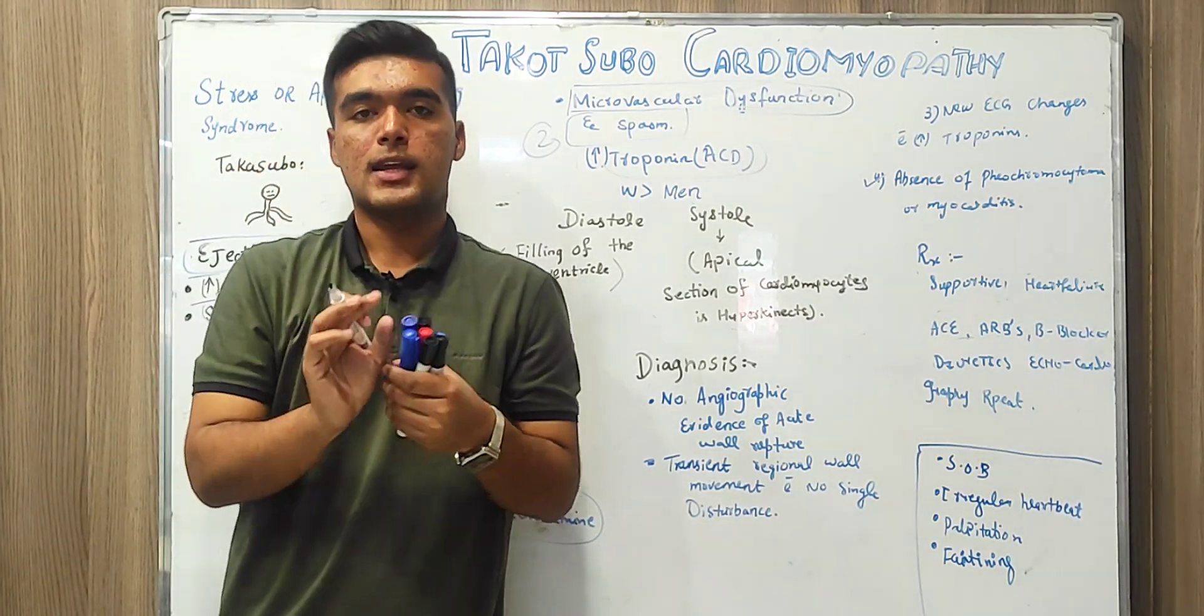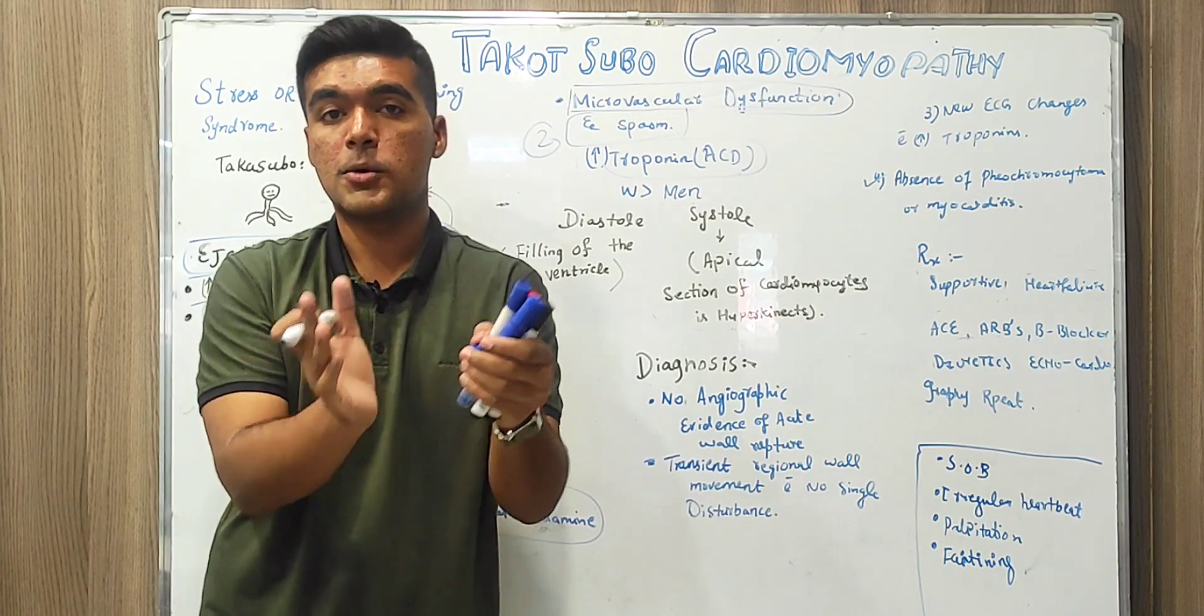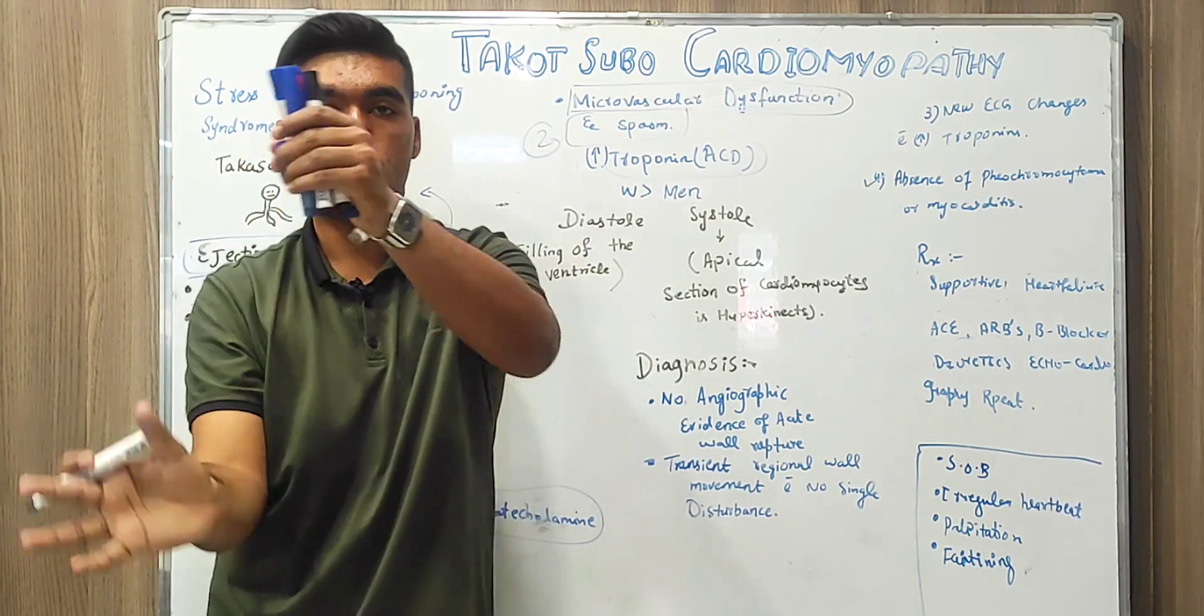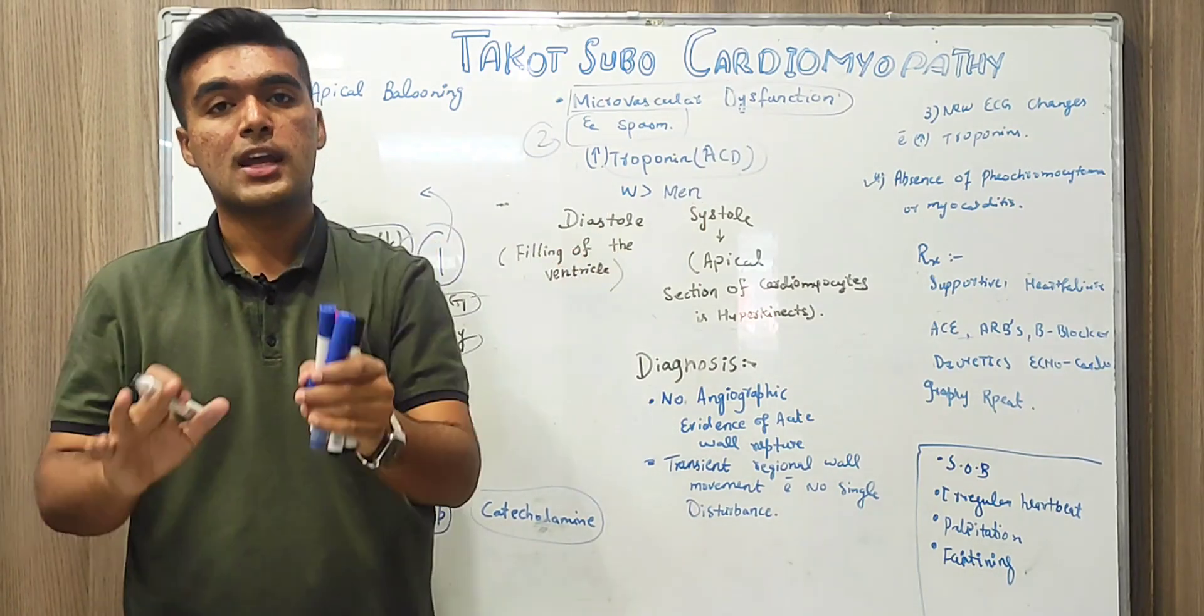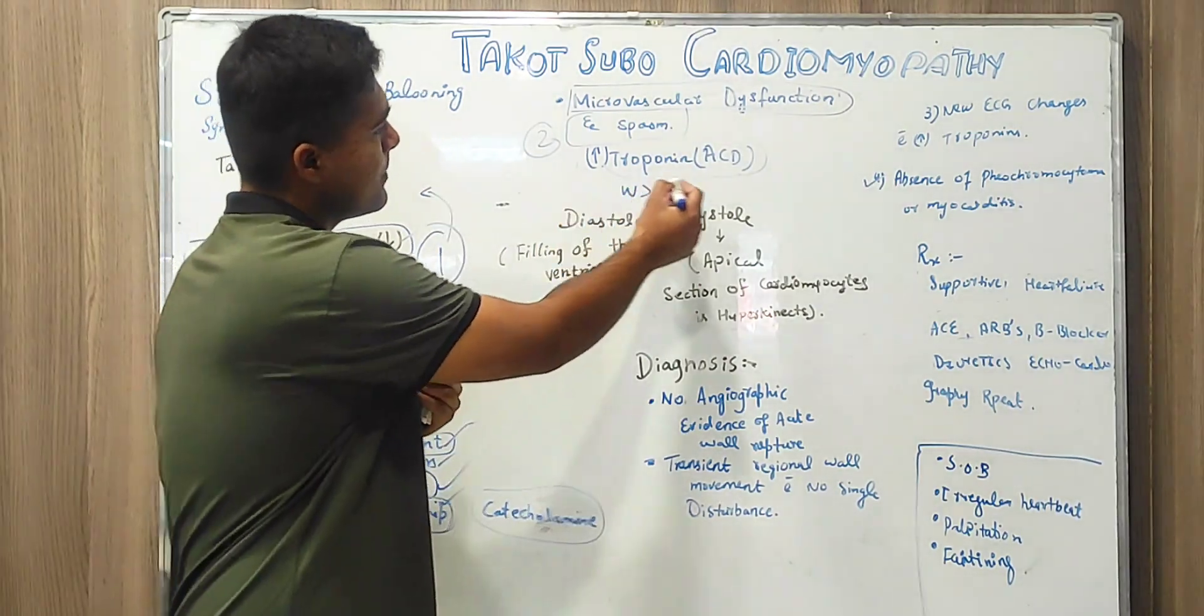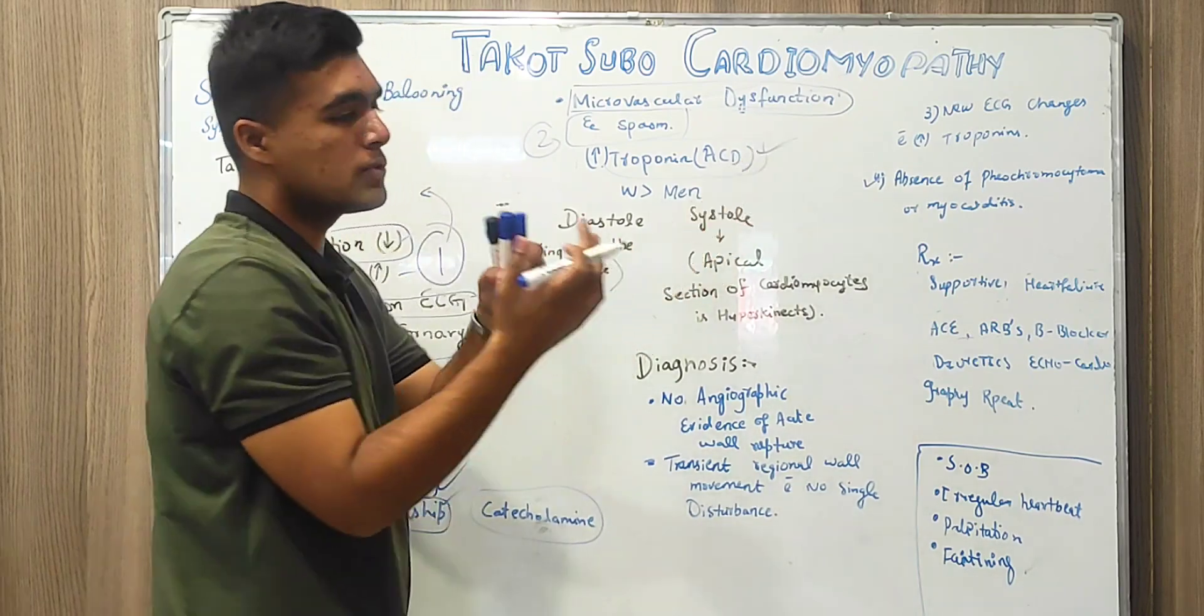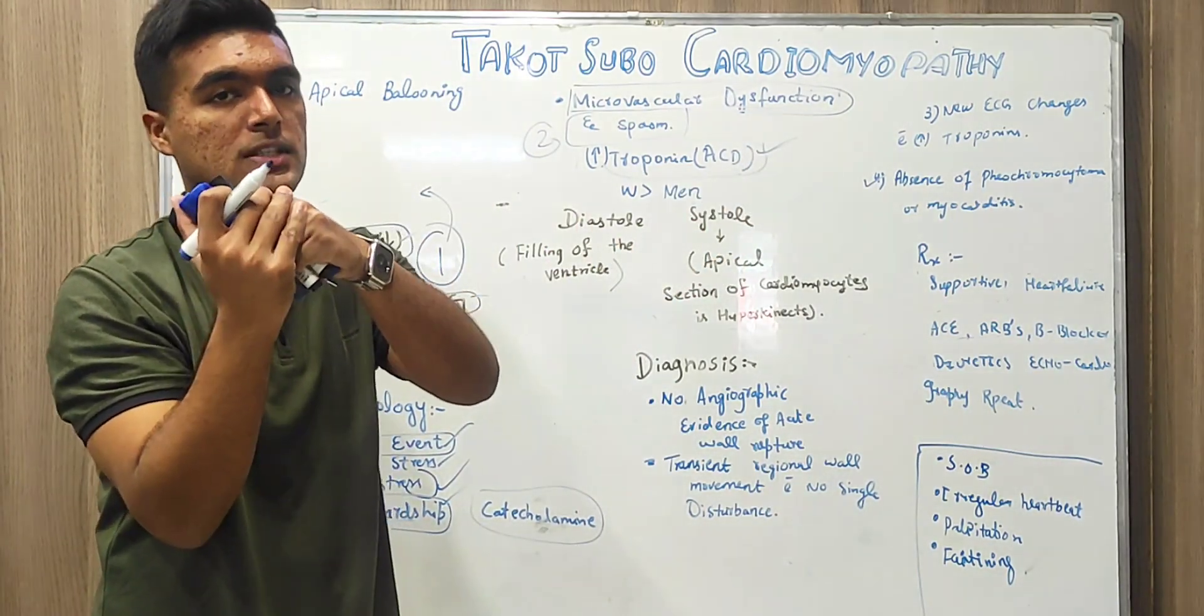Troponin is very important in contraction when we discuss about sarcoplasmic reticulum and the whole phenomena. So in contraction, troponin has a major role in muscle contractions. Troponin level increases and due to that increase, we have contraction occur.